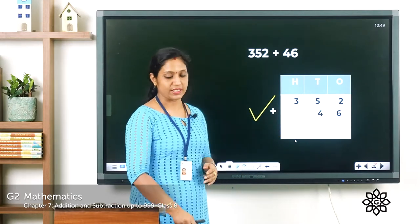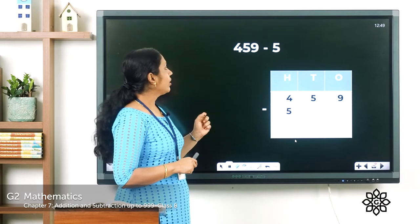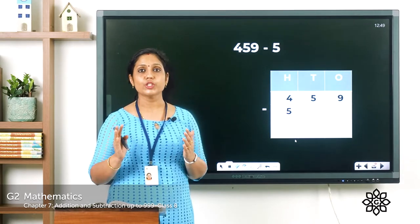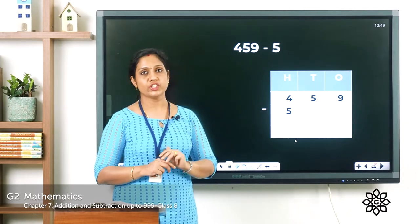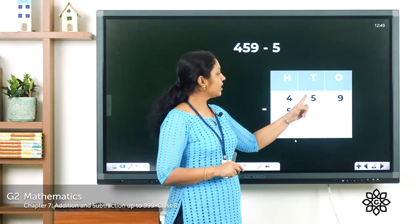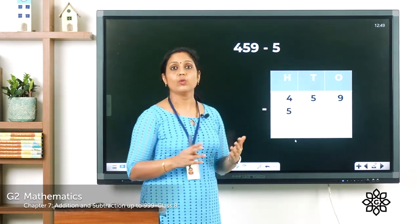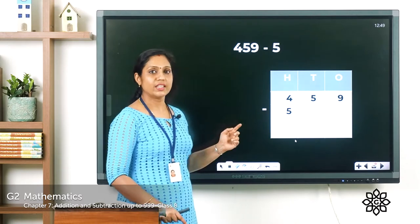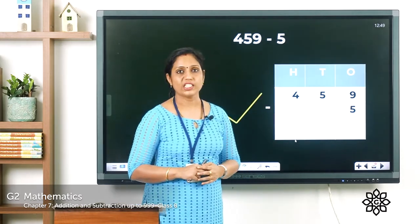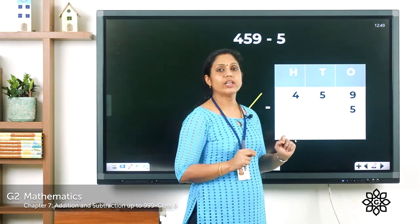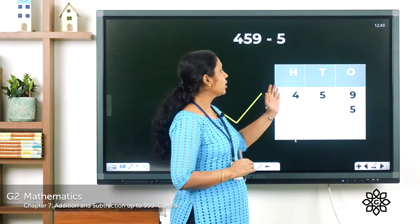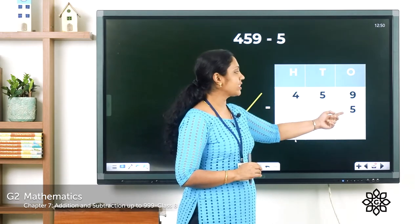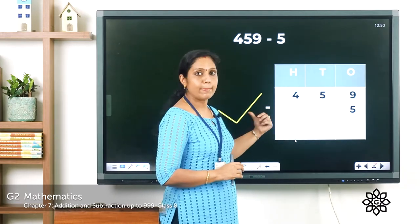Let's look at the next example: 459 minus 5. This time it's subtraction, but whether addition or subtraction, placement must be correct. 459 is a three-digit number with ones, tens, and hundreds. 5 is a one-digit number, so it should not be placed in the hundreds position. 5 must be placed in the ones position. So 459 has 4 hundreds, 5 tens, and 9 ones, and the second row has 5 ones.